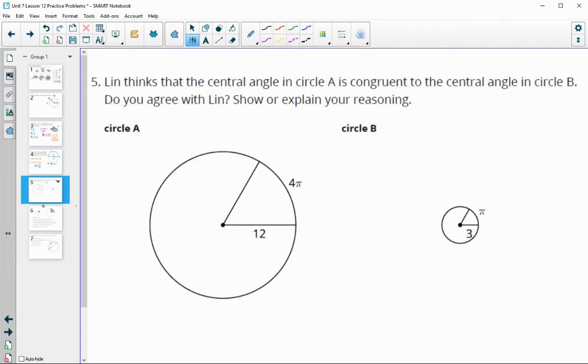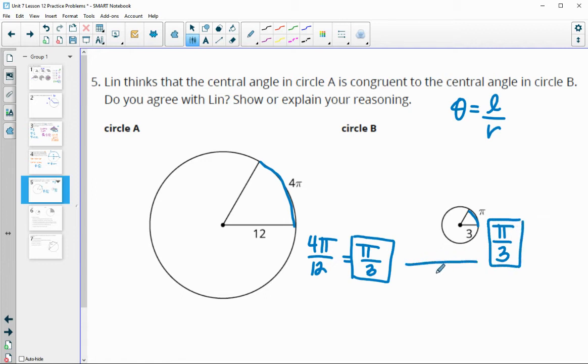Lin thinks that the central angle in circle A is congruent to the central angle in circle B. Do you agree with Lin? If we have an arc length and the radius, we can look at the radian by doing the arc length divided by the radius. In this case, our arc length is 4 pi and our radius is 12. Both divide by 4, so we get pi over 3. This would be our angle measure in radians for circle A. Now we can do the same thing over here, arc length which is pi divided by radius which is 3. And we see that they are the exact same angle.